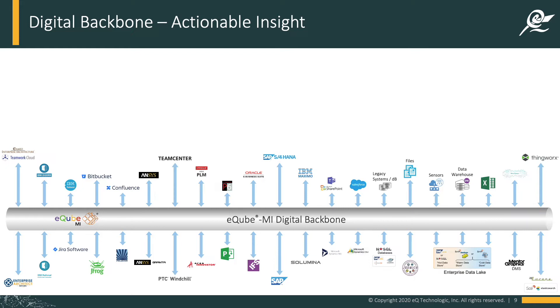EQ builds these connectors using the published APIs from the manufacturer. So when we connect to SAP, TeamCenter, or IBM Maximo, we use their published APIs to build these connectors. Once you are connected to the backbone, we can do many things. First and foremost, you are able to seamlessly integrate data from one system to the next — connecting data from DOORS to Cameo, Cameo to TeamCenter, TeamCenter to SAP, and TeamCenter to SAP to manufacturing execution systems. You can traverse this digital backbone with an integrated framework of data.